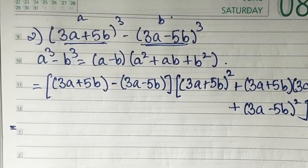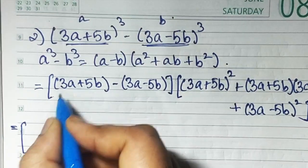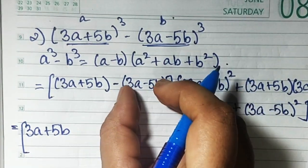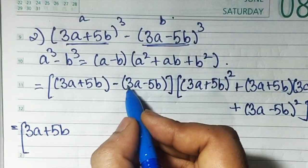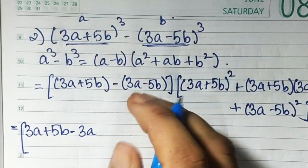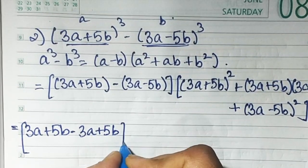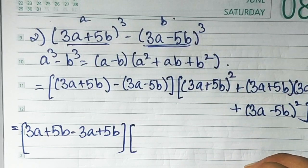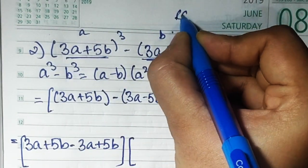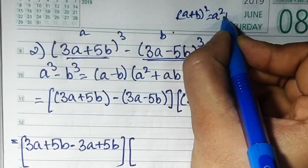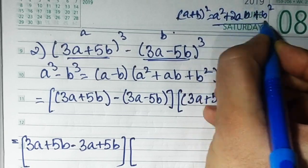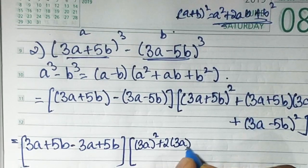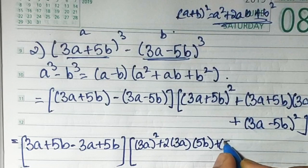Opening the first bracket from this end: 3a + 5b, and the minus sign changes the signs — plus 3a becomes minus 3a, minus 5b becomes plus 5b. Now the second bracket: (3a + 5b) whole square using a plus b whole square formula gives 9a square plus 30ab plus 25b square.